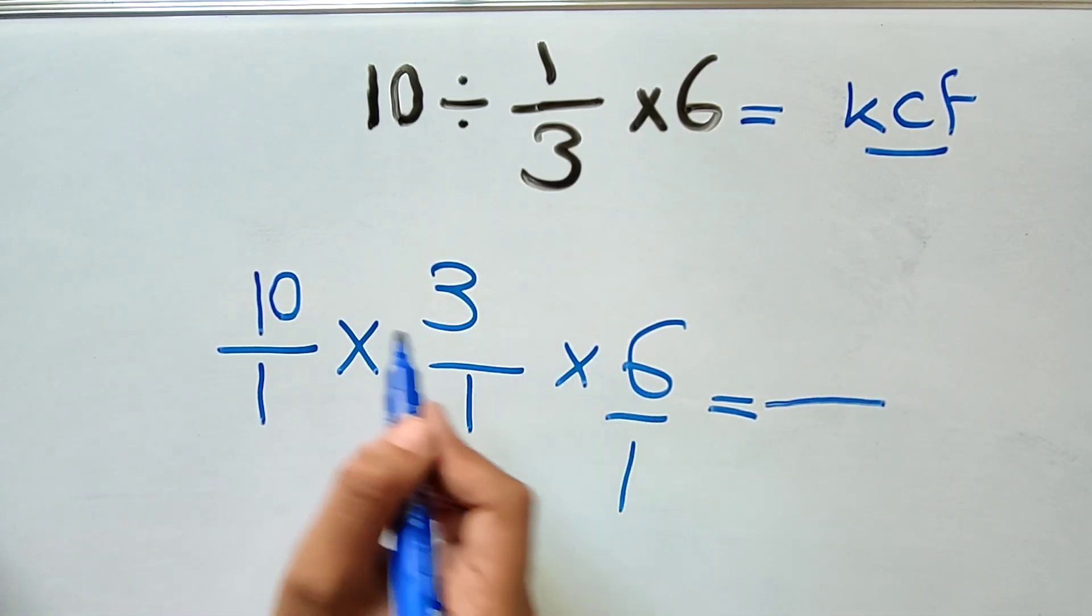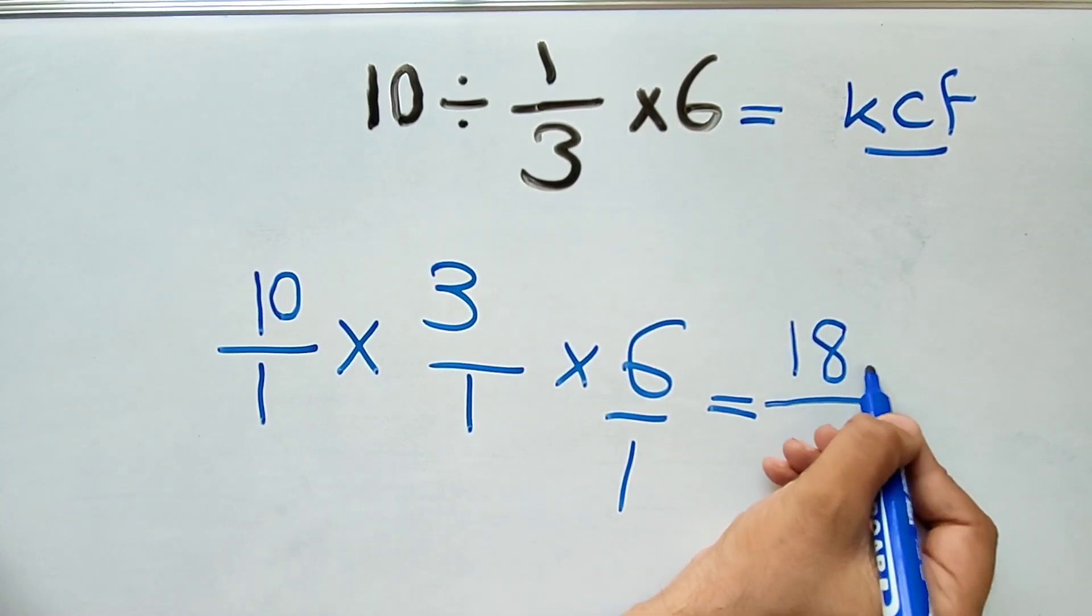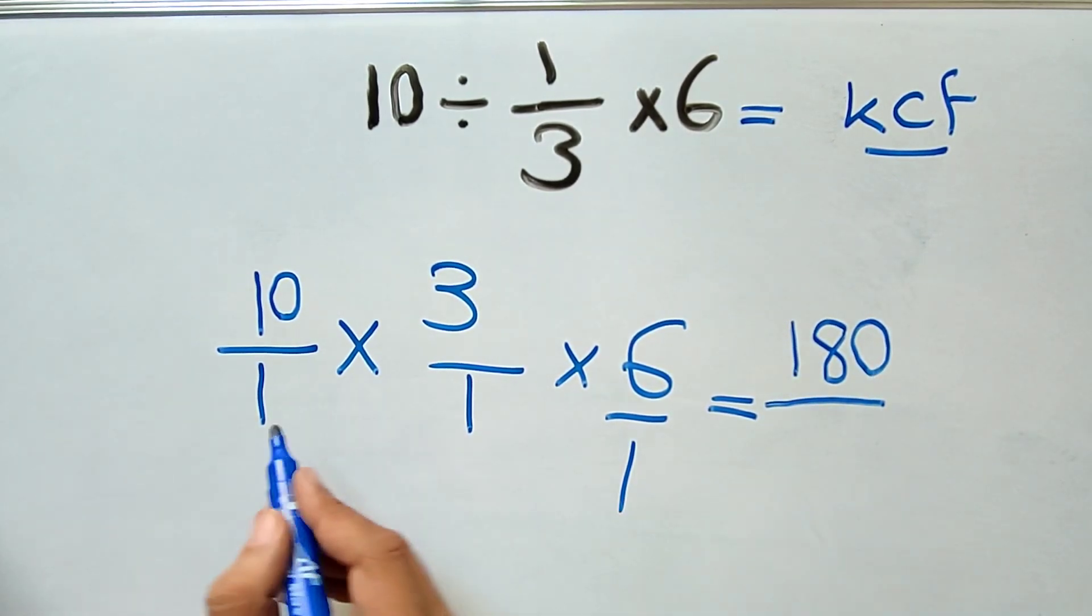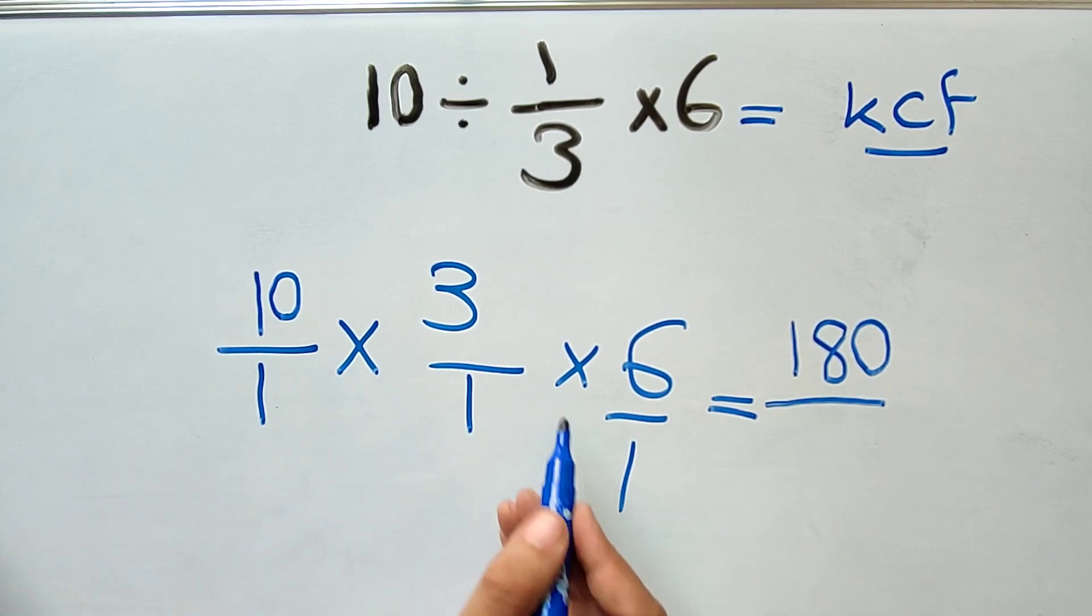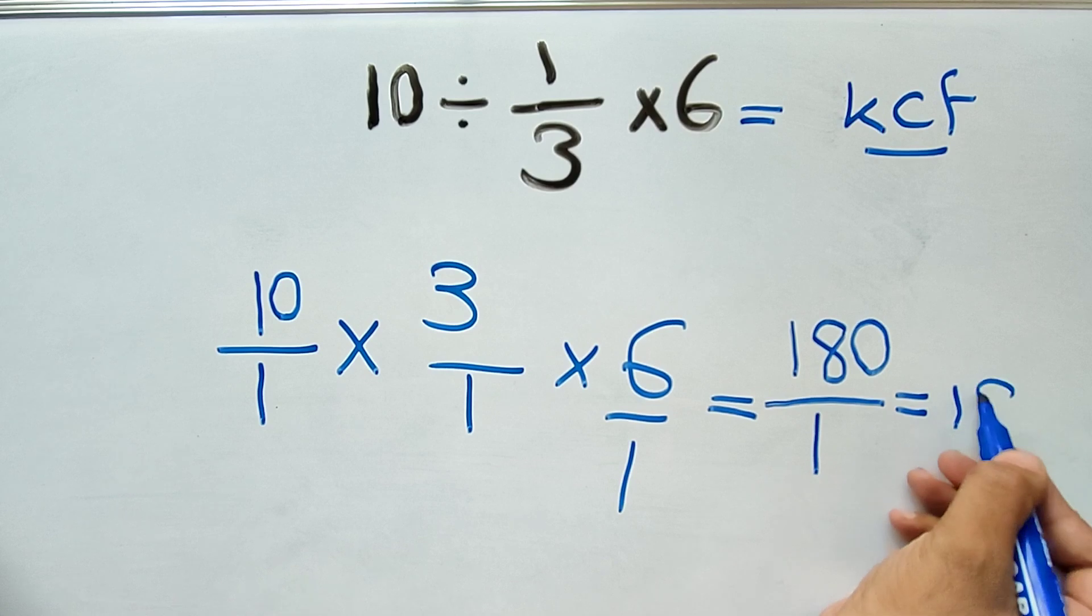That gives us 180 over 1 times 1 times 1, which gives us 1. The final answer is 180.